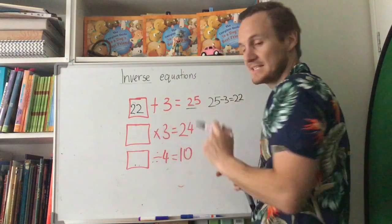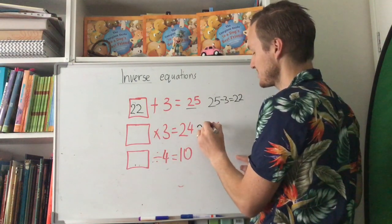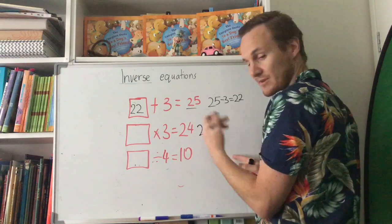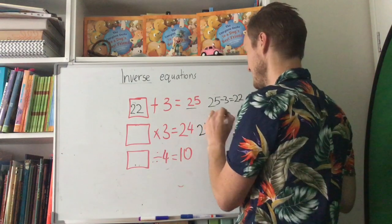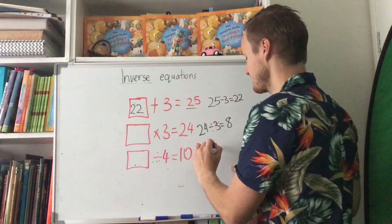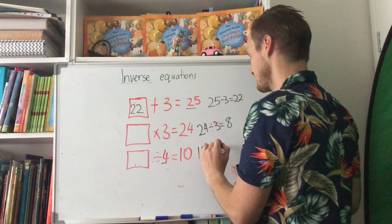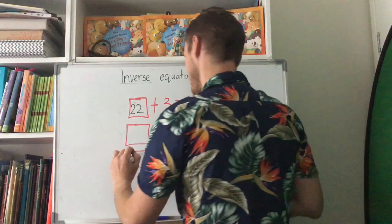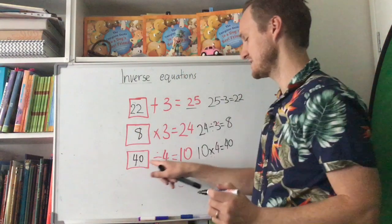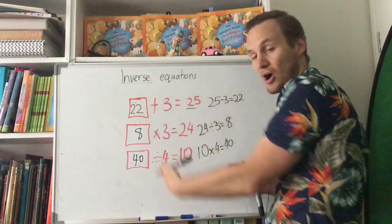What about this one? Start with the answer 24, change the operation to the opposite — division. 24 divided by 3 equals 8. Let's try the last one: start with the answer, do the opposite of division which is multiplication — times by 4 equals 40. Let's check: 40 divided by 4 equals 10. So remember with inverse: start with the answer, change to the opposite operation, and figure it out from there.